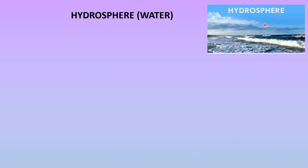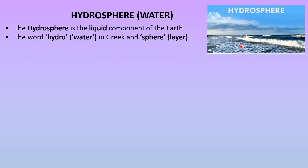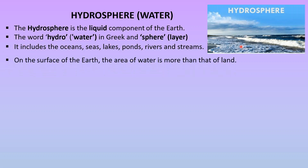Now we are going to learn about the hydrosphere. The hydrosphere means water — 71% of the Earth's surface is covered by water. The hydrosphere is the liquid component of the Earth. The word 'hydro' means water in Greek and 'sphere' means layer, so the meaning of hydrosphere is 'layer of water'. It includes the oceans, seas, lakes, ponds, rivers, and streams. On the surface of the Earth, the area of water is more than that of land.